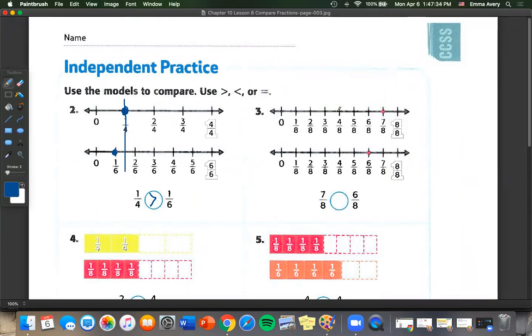For number three, they want to know seven eighths and six eighths. We could have even put these on the same number line because they both have the denominator of eight. But we know seven eighths is bigger than six eighths.